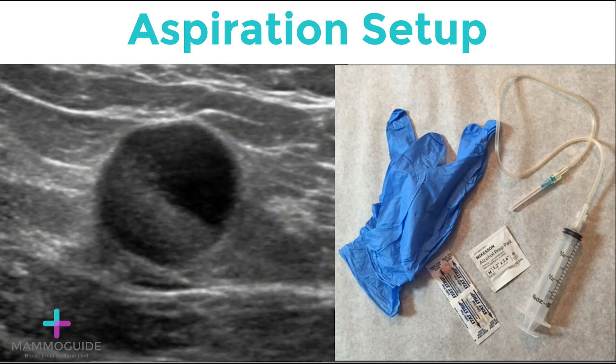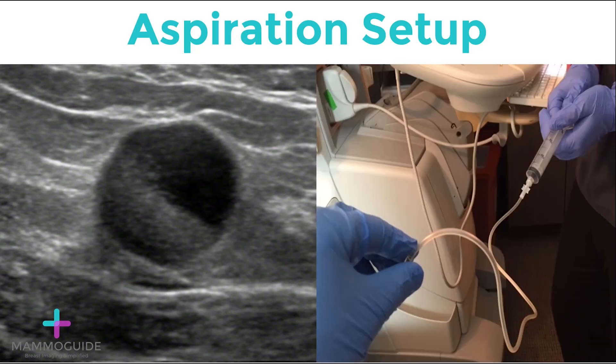What do you need to perform a cyst aspiration? It's very simple — don't make this into a more complicated procedure than it needs to be. Simply: a pair of gloves, an alcohol swab, a needle — generally 23 or 21 gauge — and a syringe with some extension tubing. If there is an assistant available, have that person hold the syringe and perform the aspirating while you direct the needle into the cyst.